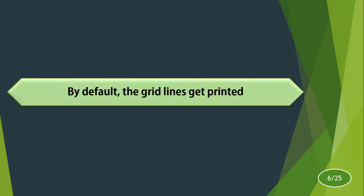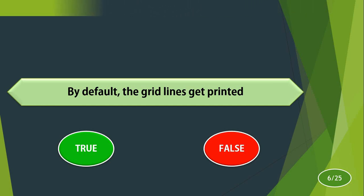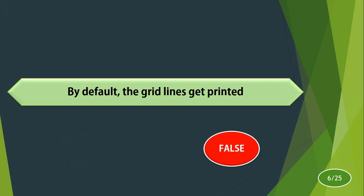By default, the grid lines get printed. True or false? The answer is false. By default, grid lines will not be printed, but you can make them print by selecting the option Print Gridlines.